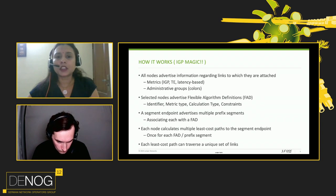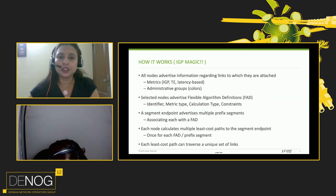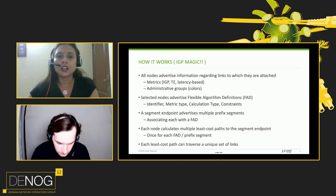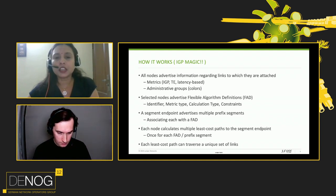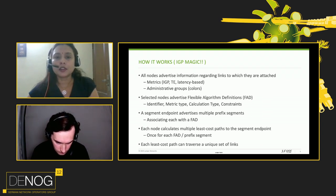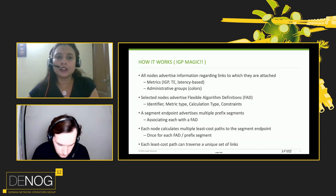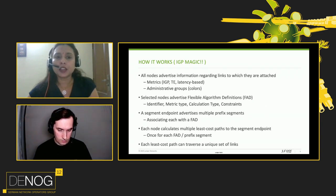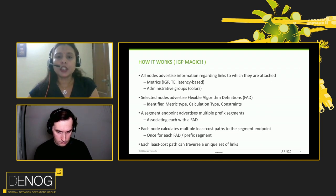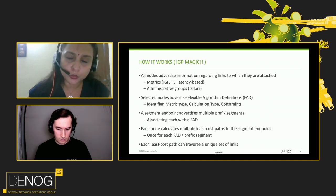What type of calculation should be used for the path computation? For example, the well-known calculation type is SPF, which is shortest path first. And what kind of constraints should be used for calculating the path? All this flex algorithm definition is identified using an identifier and advertised in ISIS or OSPF. A segment endpoint advertises multiple prefix segments, each associated with a FAD.